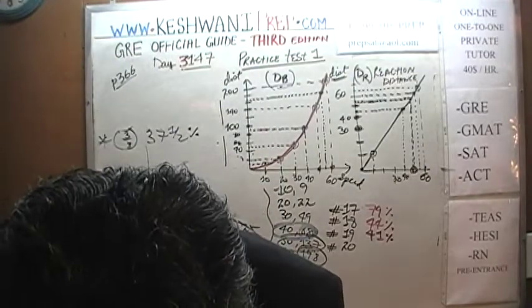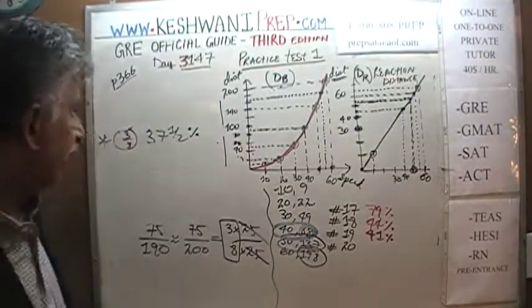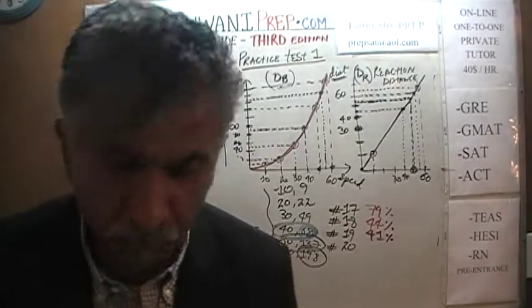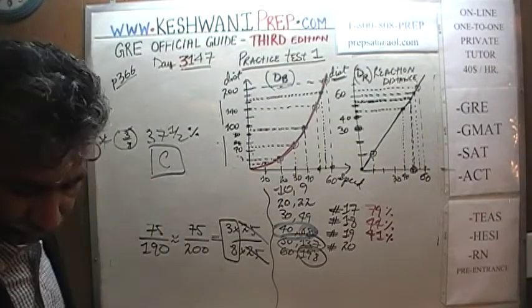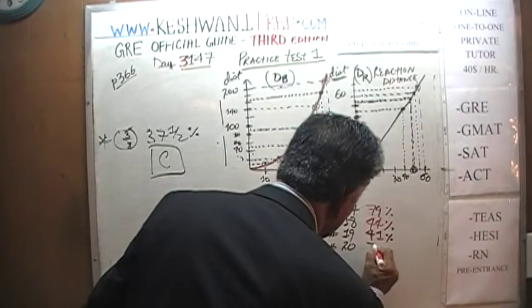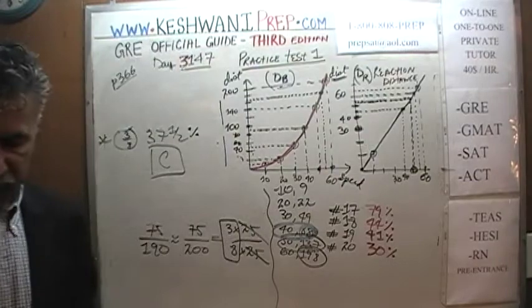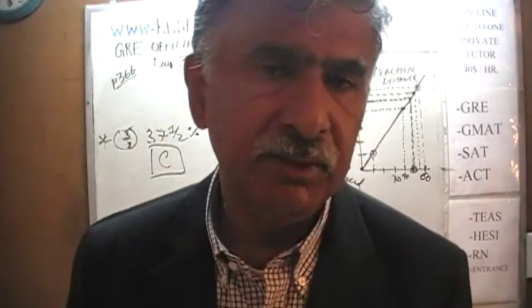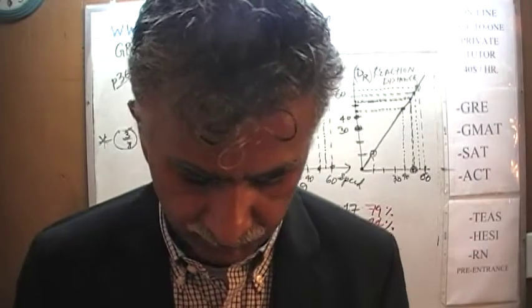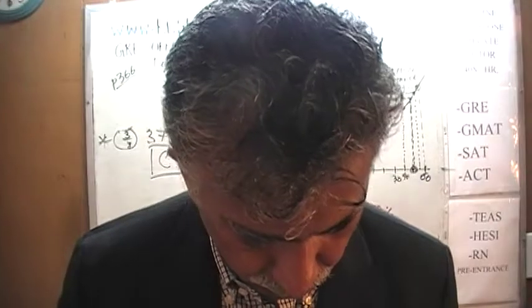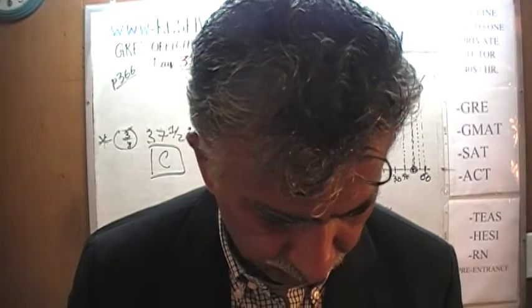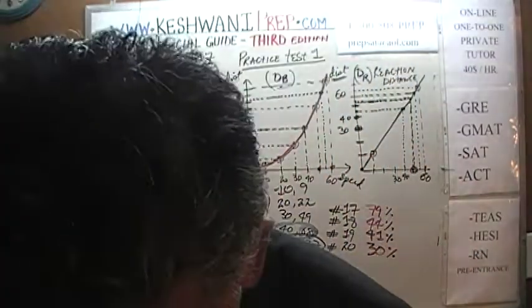The final answer for question 20 is 37.5 percent, so we pick the answer closest to that — answer choice C, which says 38 percent. The percentile for question 20 was only 30 percent — meaning 70 percent of people missed it on the real exam. That wraps up questions 17 through 20. We will pick up from question 21 tomorrow on Day 148 and do questions 21 and 22.